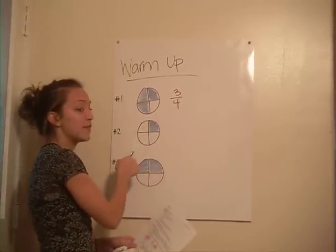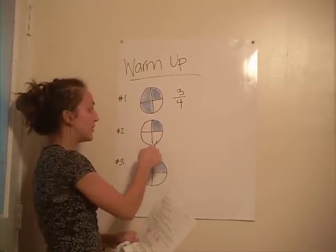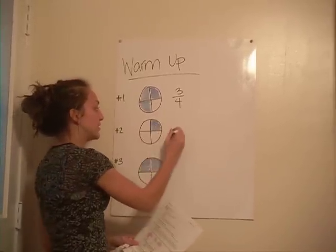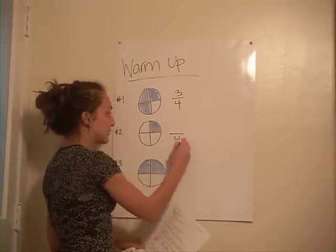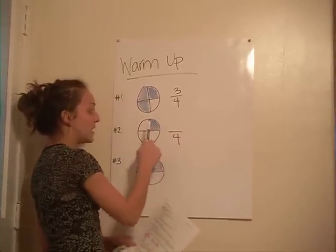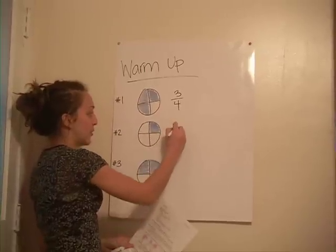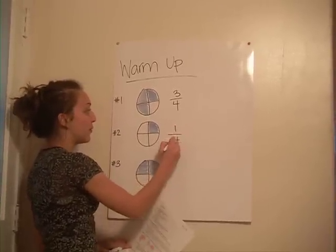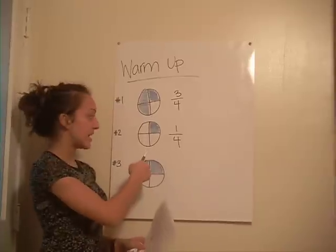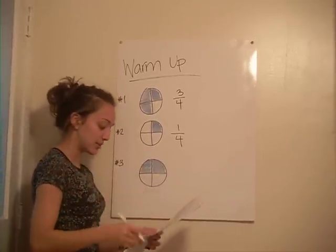Now, if we look in figure two, out of four sections, one is shaded blue. So one out of the four sections is shaded in this circle.